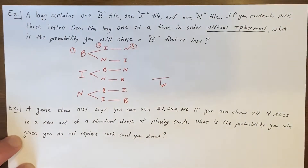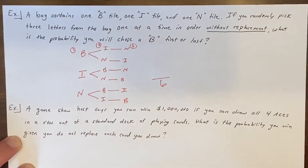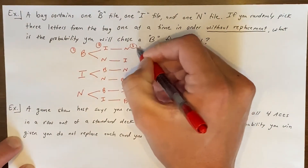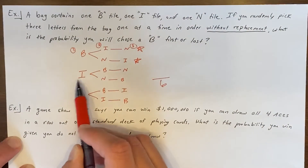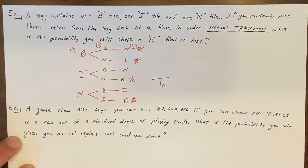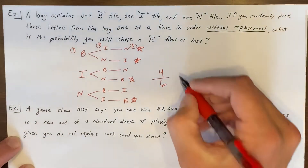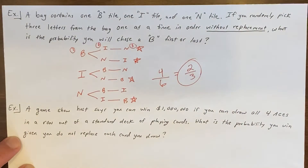Now we find favorable outcomes — the probability of choosing B either first or last. BIN and BNI both start with B, so those are favorable. Checking outcomes that start with I or N, we look at the last letter: IBN ends in N, INB ends in B — favorable; NIB ends in B — favorable; NBI ends in I. So we have four favorable outcomes out of six, giving us four over six, which reduces to two thirds. There's a two-thirds probability of drawing B first or last.